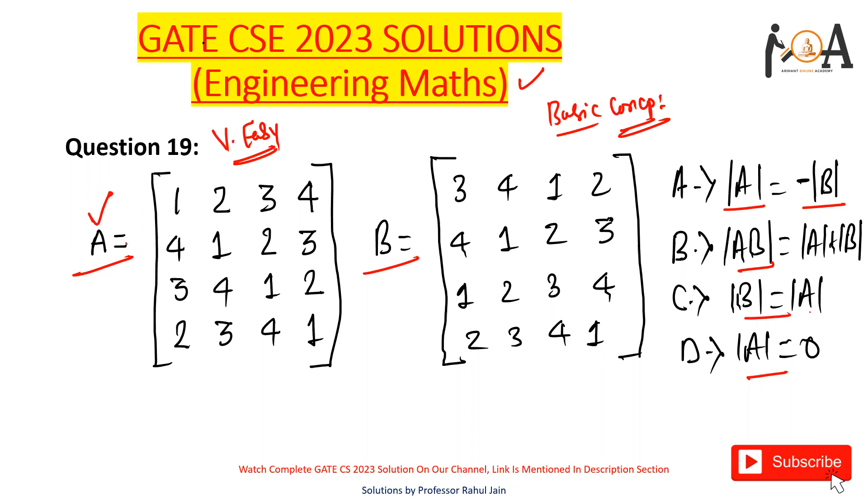Just see, this is our matrix A. This is our matrix B. Now, if you focus on the second row of matrix A: 4, 1, 2, 3, that is exactly equal to 4, 1, 2, 3, that is the second row of matrix B. Similarly, the fourth row of matrix A, that is 2, 3, 4, 1, is exactly 2, 3, 4, 1, that is the fourth row of matrix B.